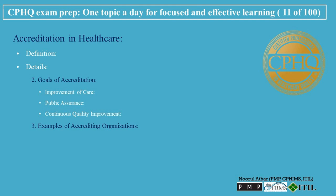Detail 3: Examples of Accrediting Organizations. The Joint Commission is a U.S.-based non-profit that accredits and certifies healthcare organizations and programs. The National Committee for Quality Assurance, NCQA, focuses on improving the quality of healthcare that organizations deliver. The Accreditation Commission for Healthcare, ACHC, offers a patient-focused approach to accreditation in various healthcare settings.